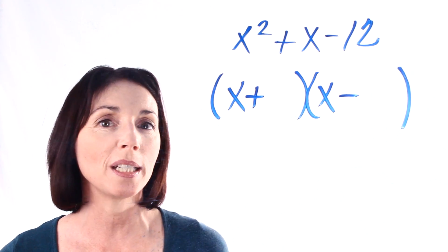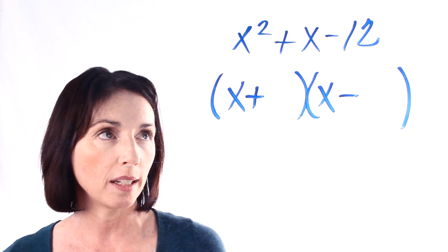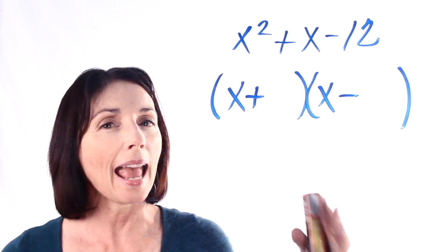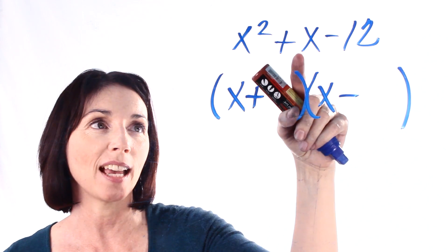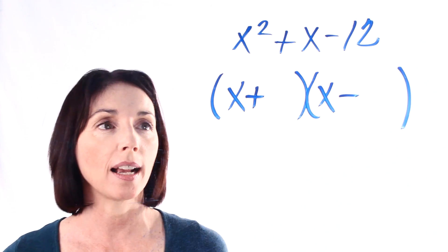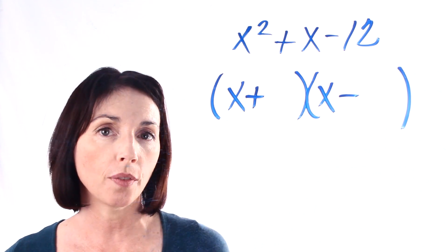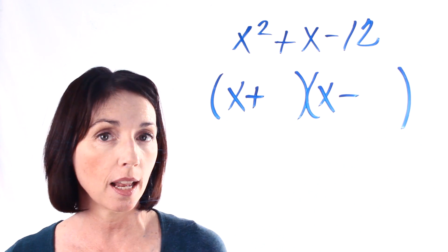So at this point we just have to figure out which two numbers we can multiply together to get 12 and add or subtract to get 1, which is what's in front of our x here. The factors of 12 are 1 and 12, 2 and 6, and 3 and 4.